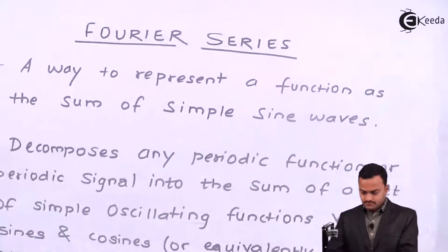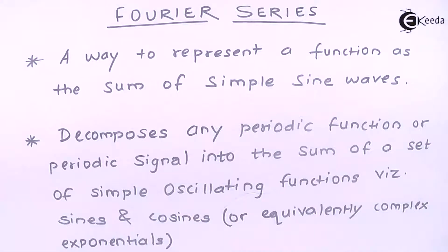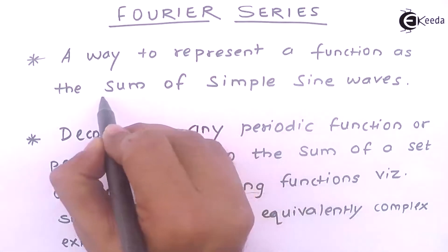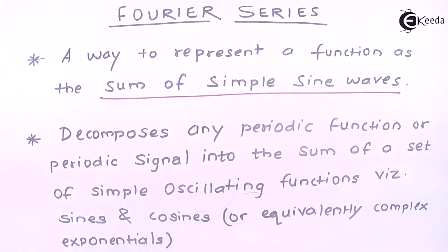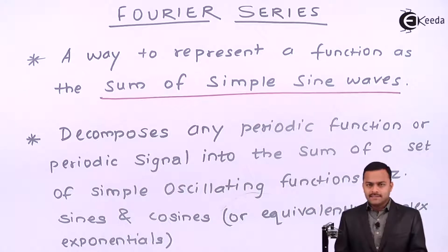Hello friends, in this video we are going to see the basic concept of Fourier series. Fourier series is a way to represent a function as the sum of simple sine waves. The important keyword here is that it is a sum, or a linear combination of sine waves. That means any function given in any independent variable X or T can be represented as a combination of sinusoids.